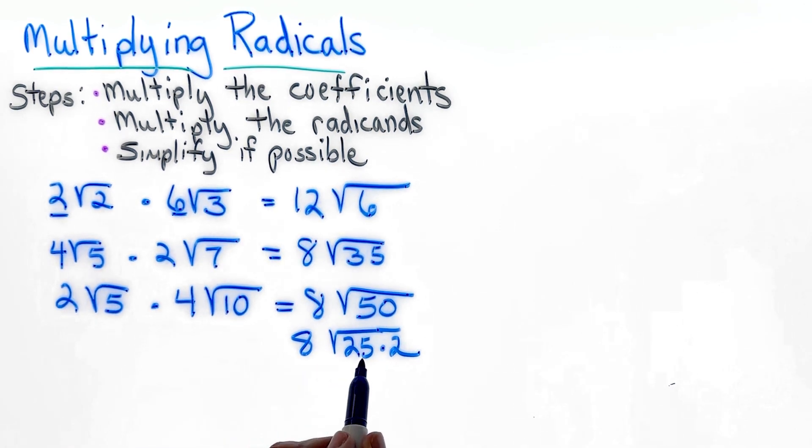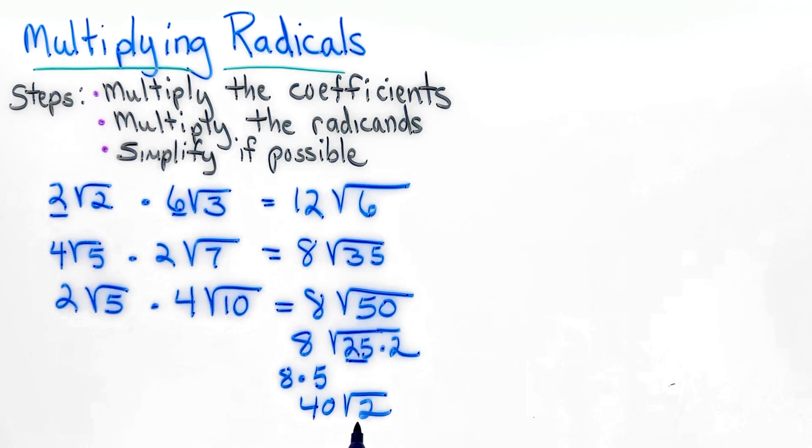Well, we know that 25 is a perfect square. So the 5 comes out. So 8 times 5 is 40. And our answer is 40 square roots of 2. And this would be the answer in simplest form.